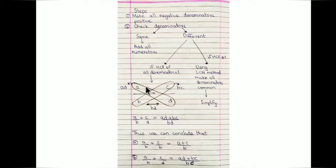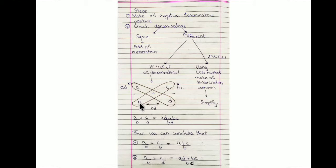Make an X symbol and multiply accordingly: multiply the numerator of the first rational number with the denominator of the second — that is, a times d — and add the denominator of the first with the numerator of the second — that is, b times c. So the numerator becomes ad plus bc.